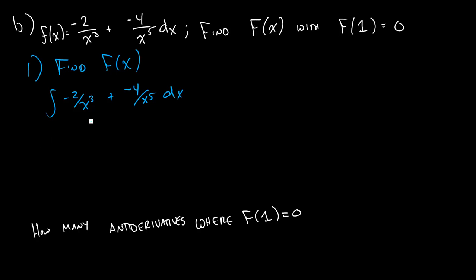We'll take the integral of negative 2 over x cubed plus negative 4 over x to the 5th dx. This looks really bad, but by the properties we learned earlier, we can split this up into two integrals. I'm going to pull this negative 2 and negative 4 out of the integral because they're constants. I'm also going to make the exponents negative, so it'll be rewritten with x to the negative 3rd and x to the negative 5th dx.